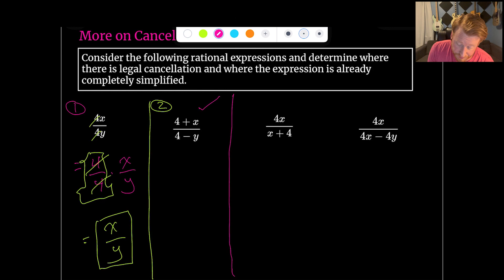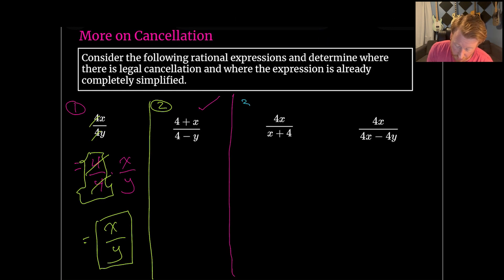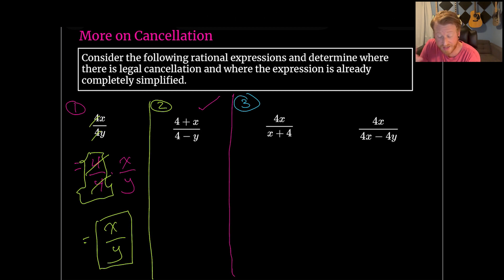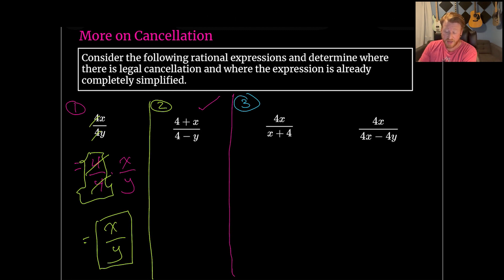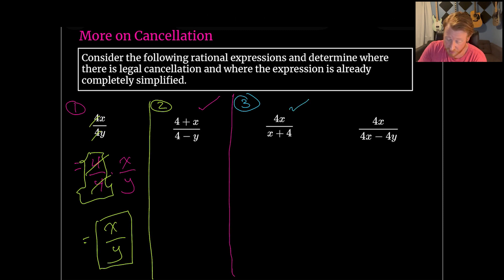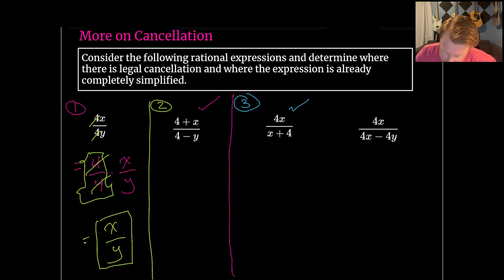Number three: 4x over (x + 4). There are some x's and 4s in common, and it would be tempting to cancel them. There is multiplication going on in the numerator — it is 4 times x — but the fact that it's x plus 4 in the denominator means there's no multiplicative one we can find. This one is also completely simplified.